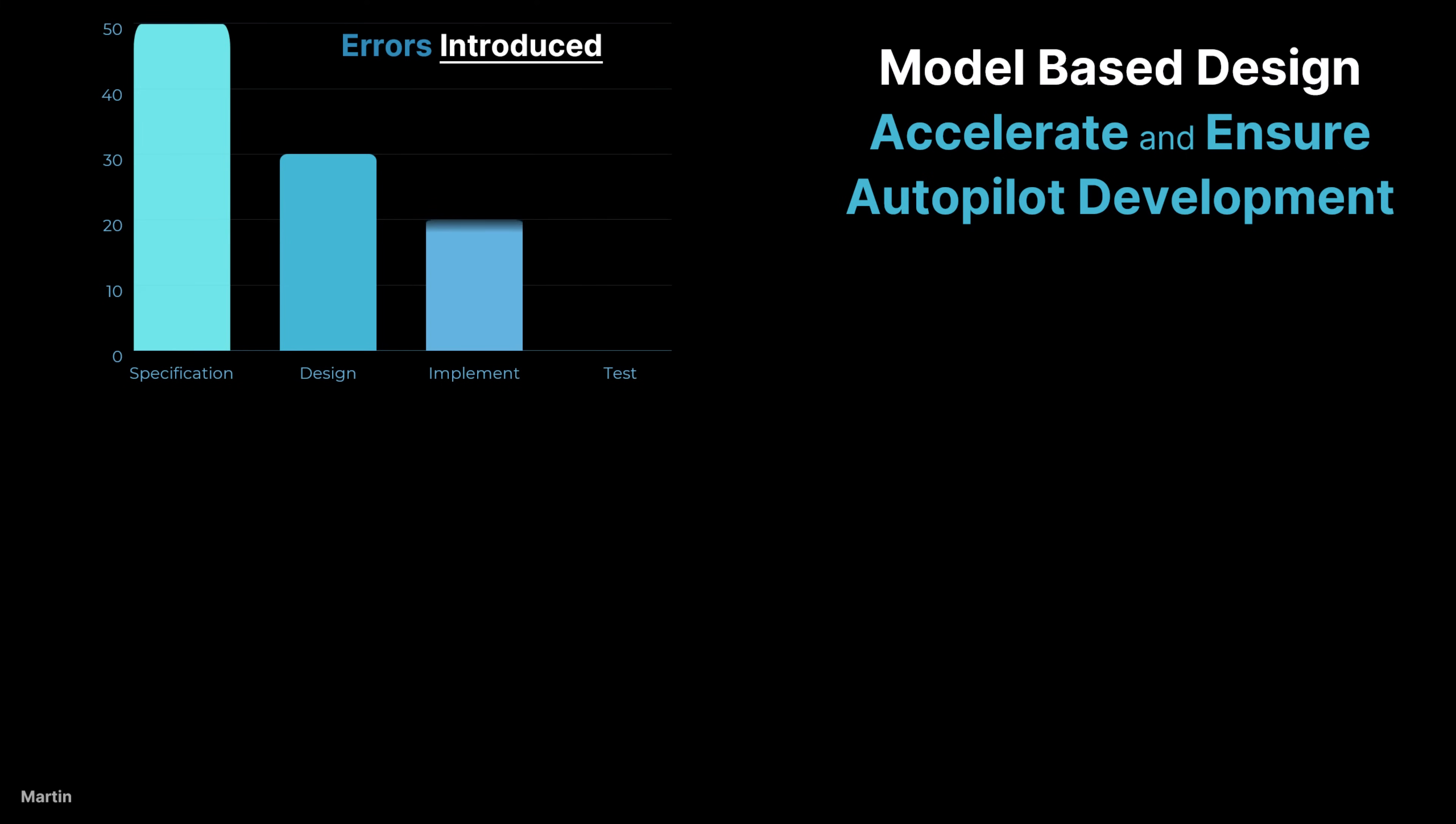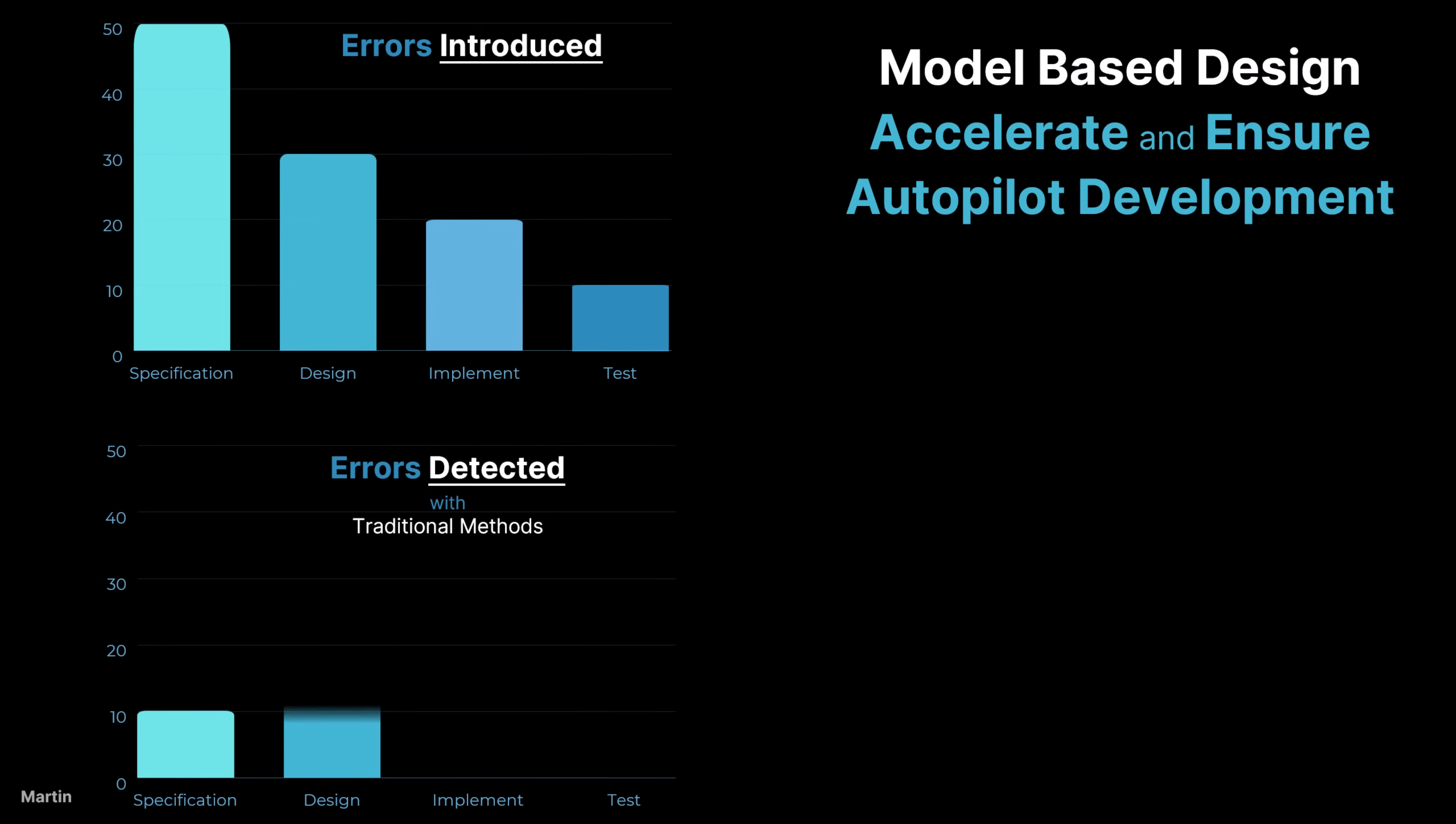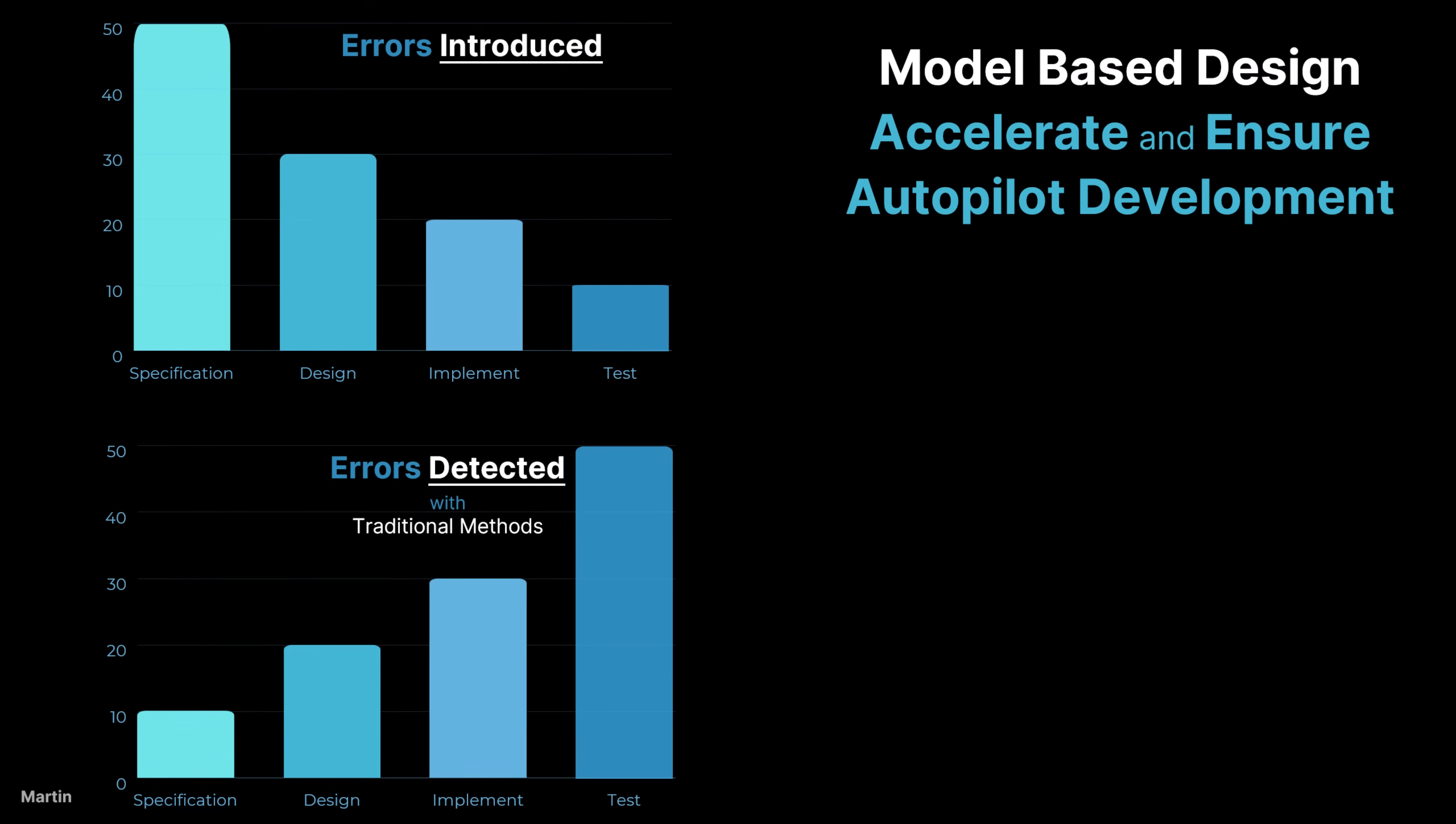Here shows more insights. Errors introduced in the early phases of the development, such as during specification and design, can have significant long-term consequences if not detected early. These errors often stem from misunderstandings or incomplete requirements, incorrect assumptions, or poor communication between stakeholders.